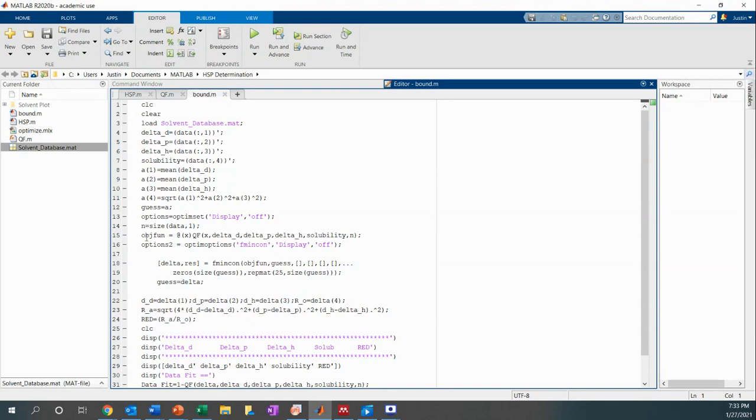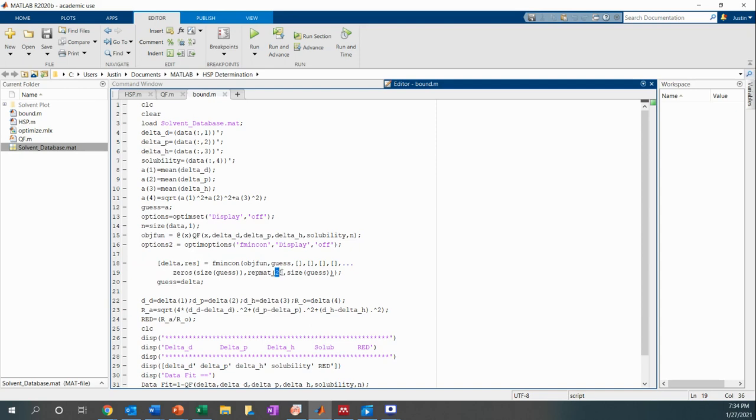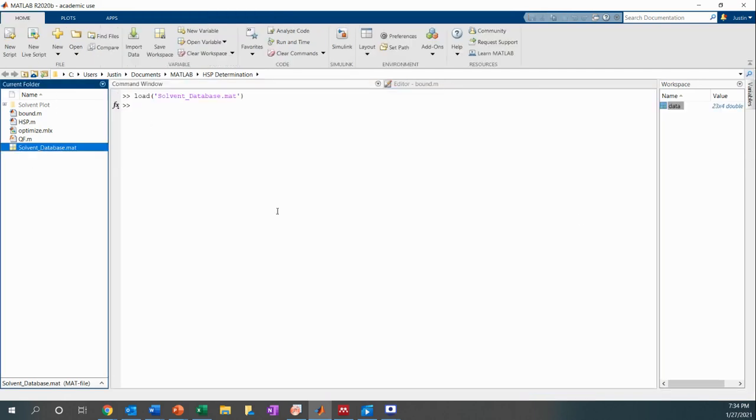Similarly, this is my bound algorithm, and this is basically the only difference. It is just a different optimization function. But here, it has a limit of 25 for each of the values, and I find that that's enough to make it into a more relatively sized sphere that has not negative values and not huge radii. So now I'm just going to show you how I run this.